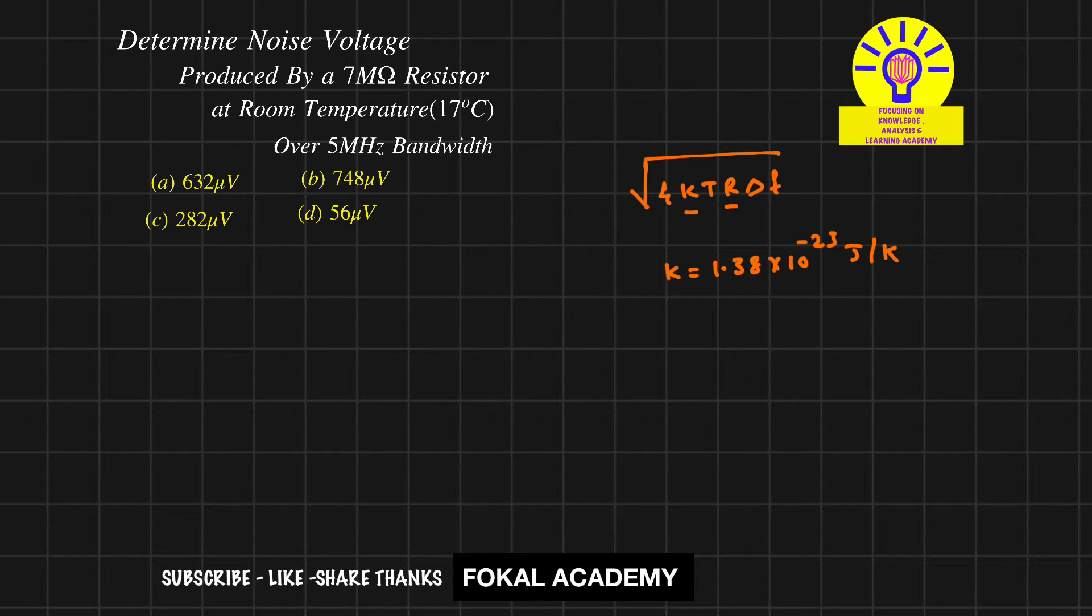Where R means resistance. Here the given resistance is 7 MΩ, so R equal to 7 into 10 power 6. And delta f means bandwidth. Here given bandwidth is 5 MHz, that is delta f equal to 5 into 10 power 6.